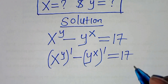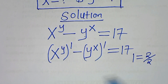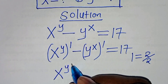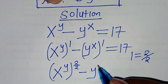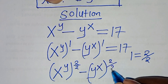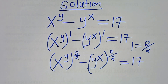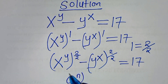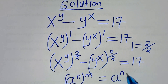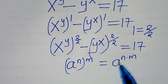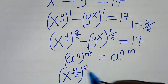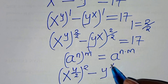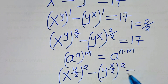The next step is that we can express 1 as 2 over 2. So now we have x to the power of y raised to the power of 2 over 2, minus y to the power of x raised to the power of 2 over 2, and this is equal to 17. Applying the exponent property that (a^n)^m = a^(n×m), we get x to the power of y over 2, raised to the power of 2, minus y to the power of x over 2, raised to the power of 2. This is equal to 17.